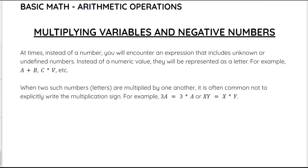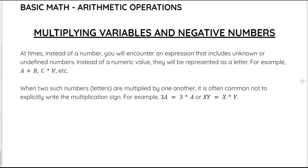At times, instead of a number, you will encounter an expression that includes unknown or unidentified numbers. Instead of a numeric value, they will be represented as a letter — for example, a plus b, or c times b, and so on. These are called variables.